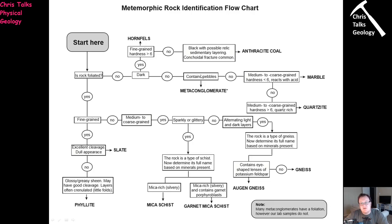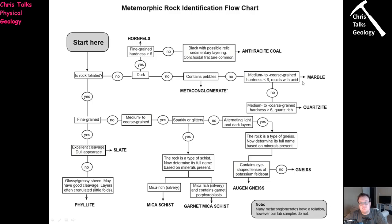If our rock is not dark and it contains pebbles, then we end up with a metaconglomerate. If it's not a metaconglomerate, we have a couple of options. Obviously if our rock reacts with acid, it's going to be a marble because marbles are made of carbonate minerals, typically calcite, and calcite reacts with acid. Our other option is a quartzite, which is obviously going to be made of quartz, with a hardness in excess of six — hardness of seven on the Mohs scale — and it's not going to react with acid. So these are our possible options.